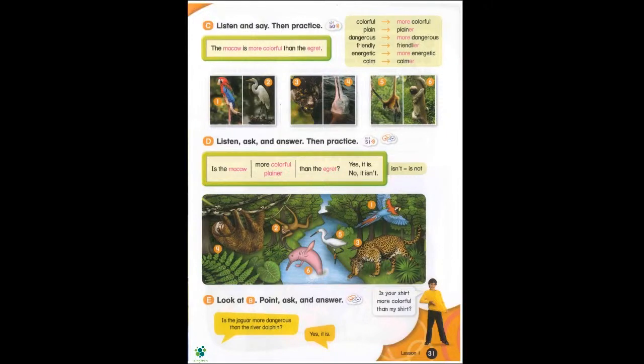Page 31 C. Listen and say, then practice. The macaw is more colorful than the egret. Colorful, more colorful. Plain, plainer. Dangerous, more dangerous. Friendly, friendlier. Energetic, more energetic. Calm, calmer.